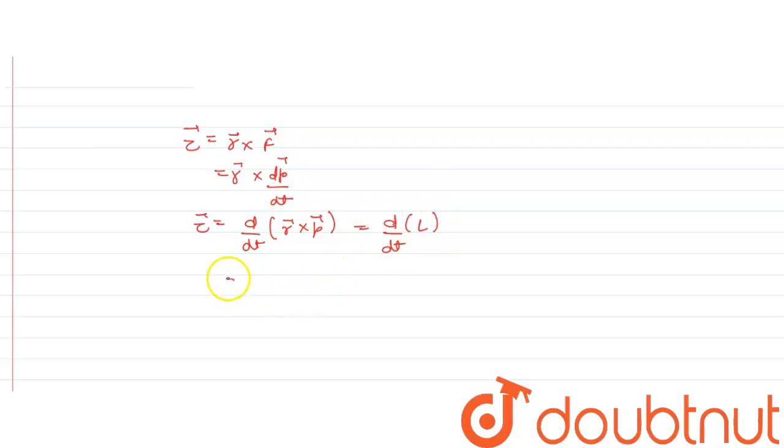So T0 will become dL by dt, which means L final minus L initial upon T2 minus T1, which is L final minus L initial.